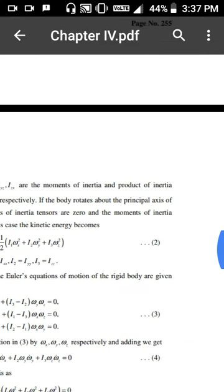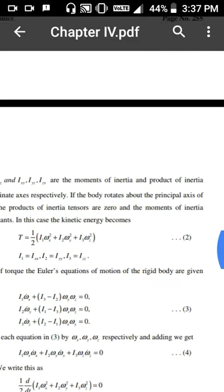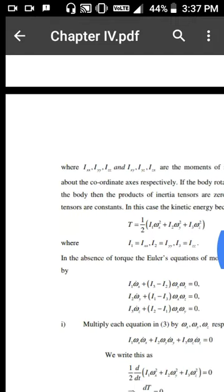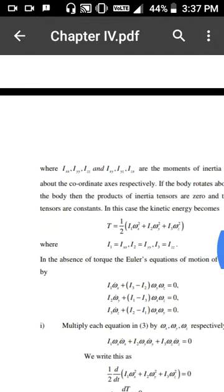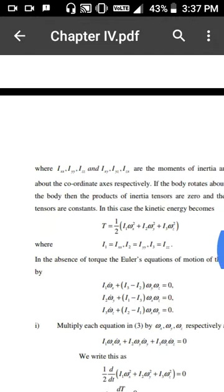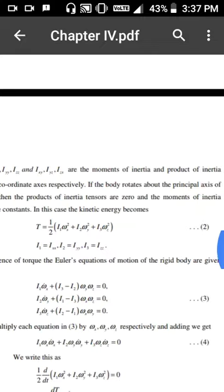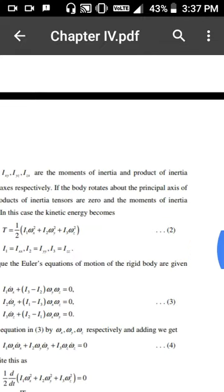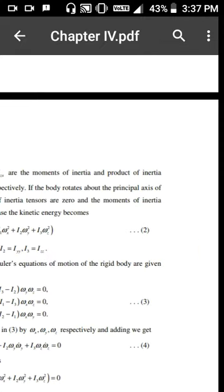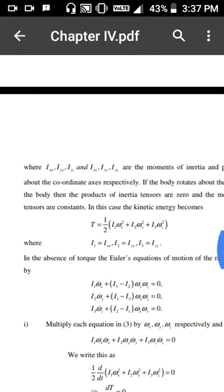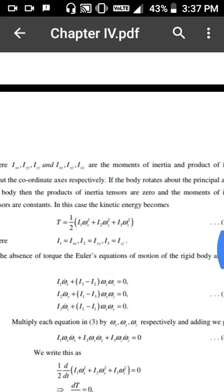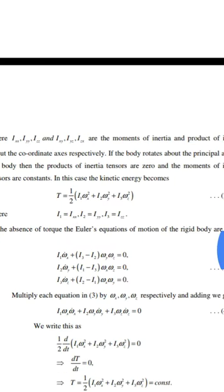If the body rotates about the principal axis, then the products of inertia are zero and the moments of inertia are constant with respect to those axes.